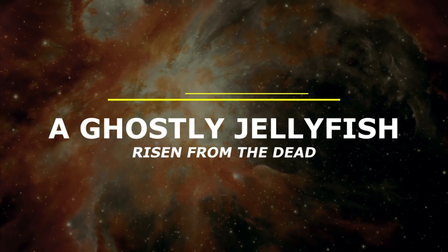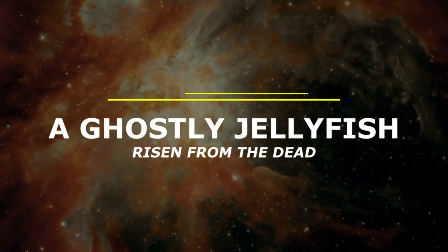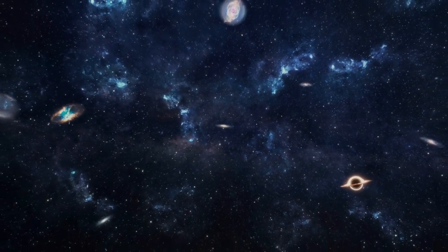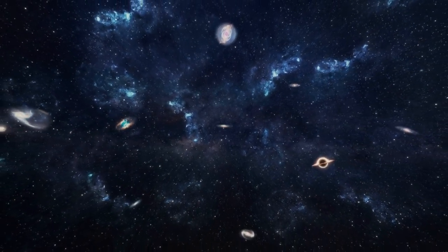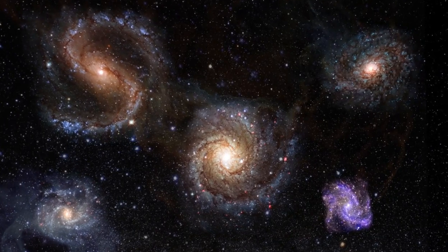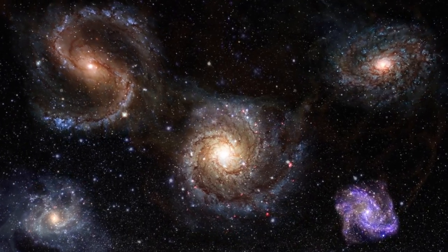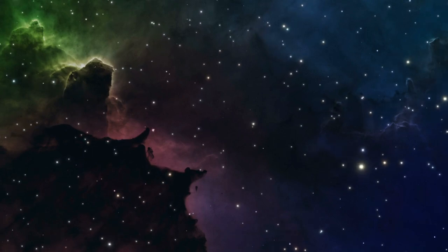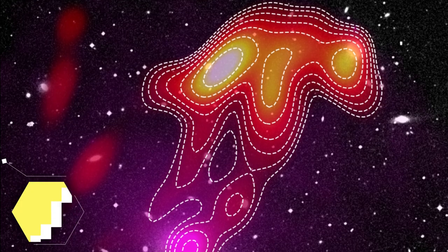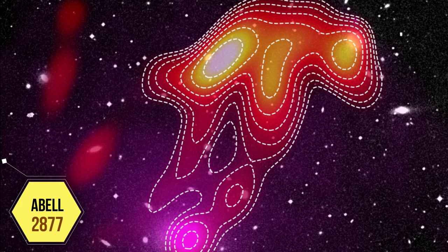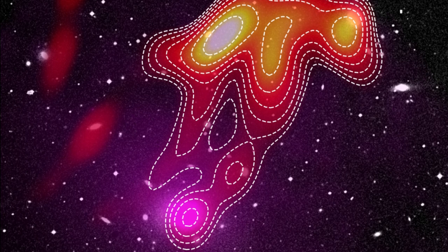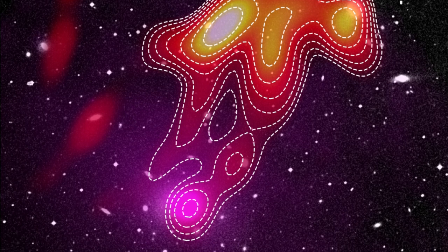A ghostly jellyfish risen from the dead. Galaxy clusters are the largest known structures in the universe, bound together by gravity. They can contain thousands of galaxies, enormous clouds of hot gas, and sometimes the glowing ghost of a jellyfish or two. In the galaxy cluster Abell 2877, located in the southern sky about 300 million light-years from Earth, astronomers have discovered one such jellyfish.